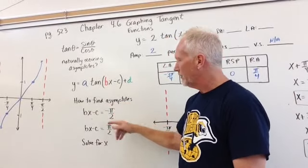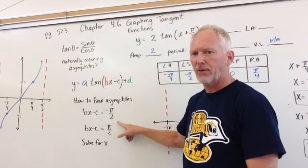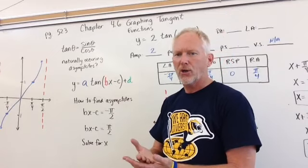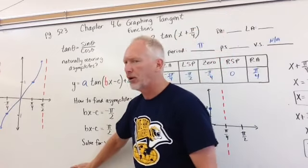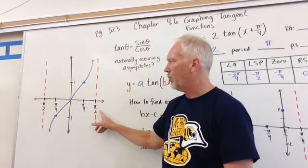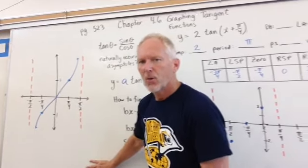How do we find those asymptotes? Well, we set bx minus c equal to negative pi over 2 and pi over 2. If you look at your unit circle, again, you recognize that there are naturally occurring asymptotes at negative pi over 2 and pi over 2. And so we graph the function that way.